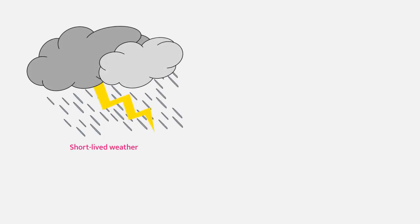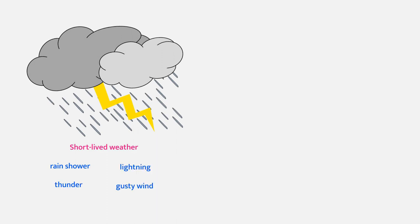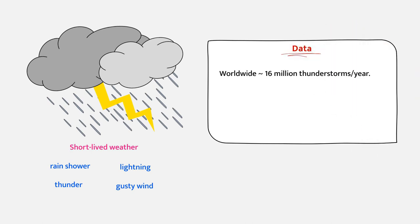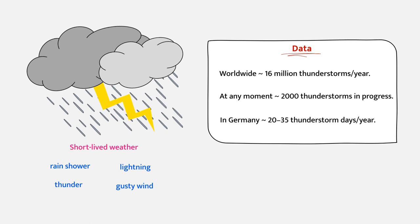A thunderstorm is a short-lived weather condition that includes rain showers accompanied with thunder, lightning and strong gusty wind. Globally there are an estimated 16 million thunderstorms each year, and at any given moment there are roughly 2,000 thunderstorms in progress. In Germany, the statistics show between 20 and 35 thunderstorm days per year.